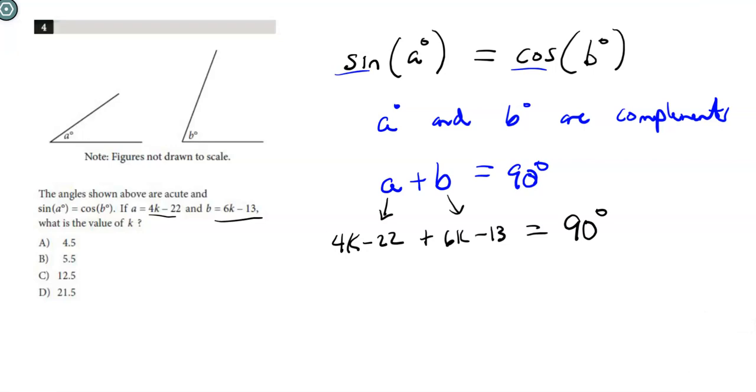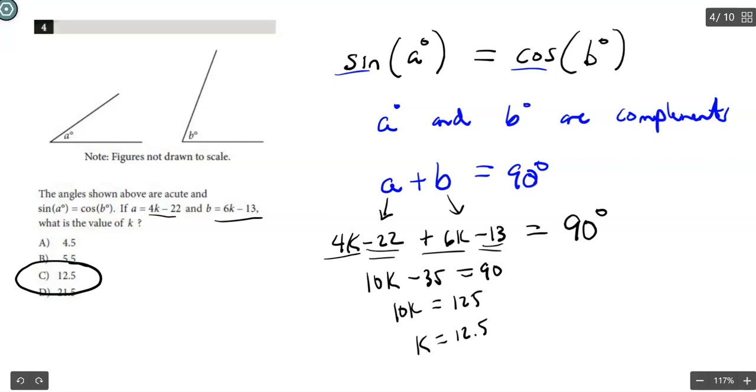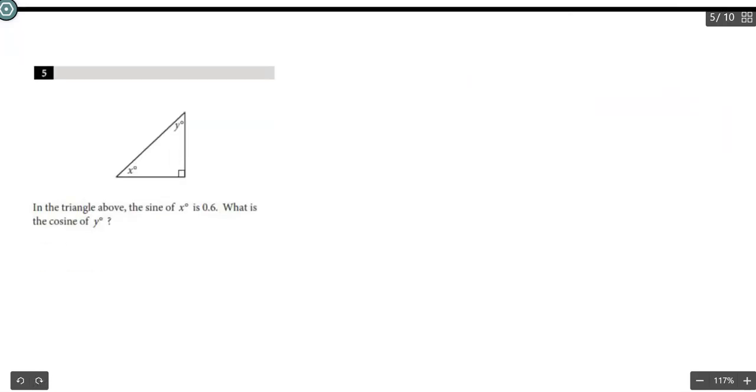So A plus B equals 90. Let's combine some like terms. We have a total of 10K, then we have a negative 22 and a negative 13, which is negative 35 equals 90. Solving for K, we add 35 to both sides and we're going to get 10K is 125. Divide by 10, and we get the value of K to be 12.5. A tougher problem, but not too bad if you understand this whole complement piece.